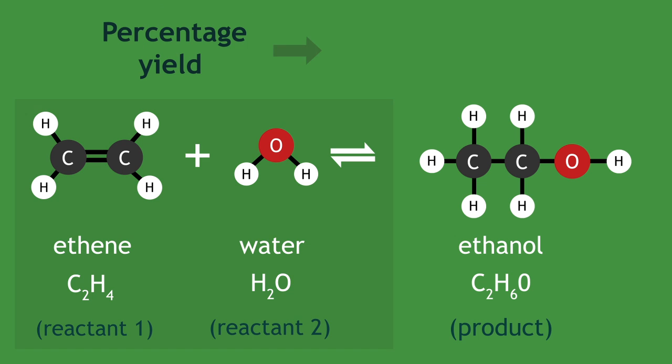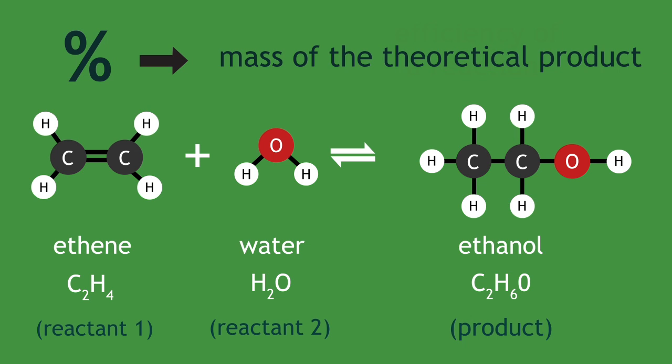Percentage yield tells us the efficiency of a reaction in that it shows us the amount of product that was practically made as a percentage of the mass of theoretical product that should have been made.